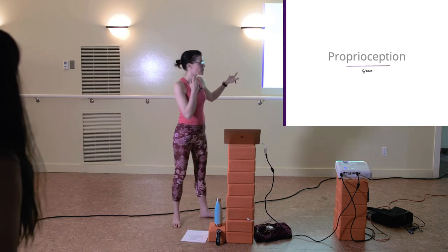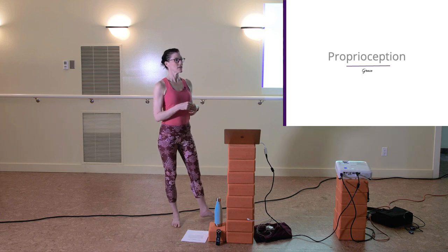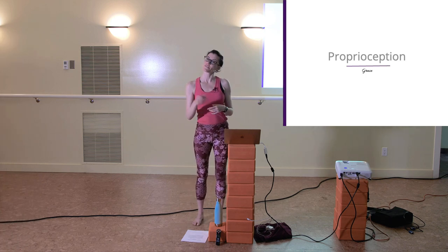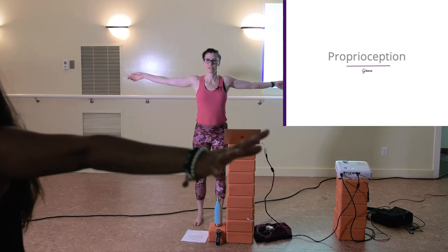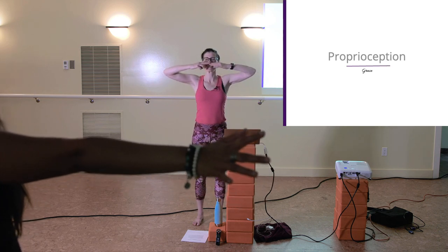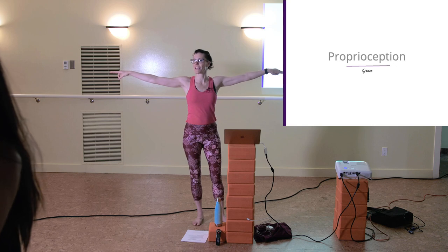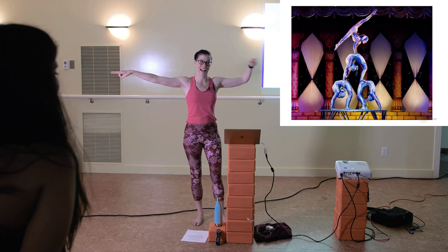Proprioception — what is it? It's all the feedback going on from muscles to help you maintain a certain position in space, to know where you are without using your eyes. Close your eyes, arms out to the sides, touch your nose — that's proprioception. One thing affected by alcohol is your proprioception, hence sobriety tests.